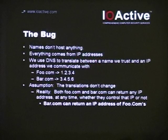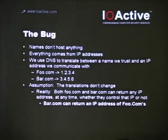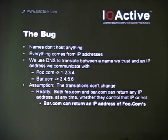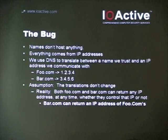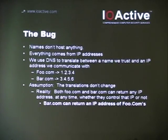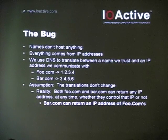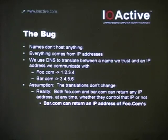You use DNS to translate between a name and an IP address. The idea was that ioactive would have its IPs, and Hotmail would have its IPs, and never the twain should mix.